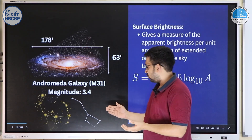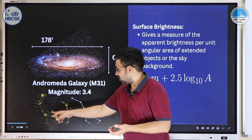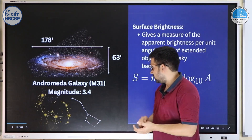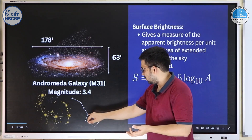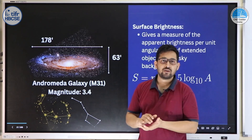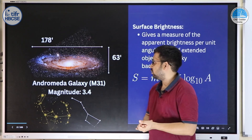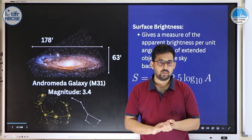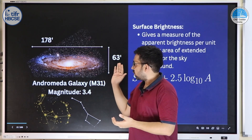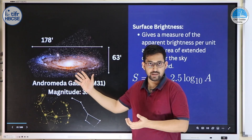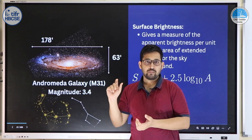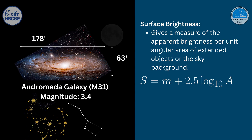In astronomy literature, Andromeda is listed with a magnitude of 3.4 — similar to a star near the head of Orion or the fourth star in Ursa Major, both fairly easy to spot in a dark sky. Yet Andromeda is quite tricky to observe. The reason: magnitude 3.4 means the total flux received from the entire Andromeda Galaxy equals that of a magnitude 3.4 point source. The flux is spread over a large area, making it appear diffuse.